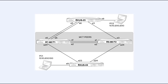From the perspective of the client switches, the connections are normal lags. The two MCT peer nodes will have two links between them — one for the inner chassis link, or ICL, and one for the Keepalive VLAN. Finally, we have two PCs, one connected to the Ruckus L4 switch and one connected to the Ruckus L5 switch. I'll use these to verify end-to-end connectivity through the MCT cluster.